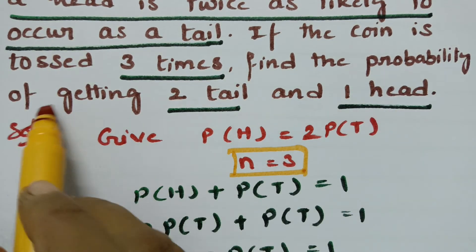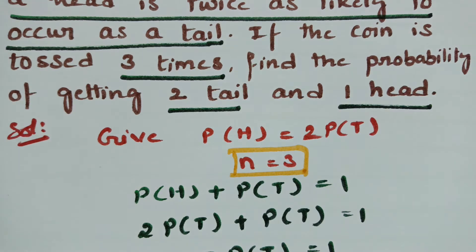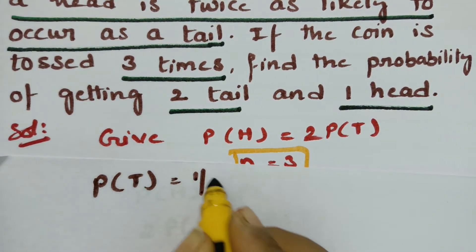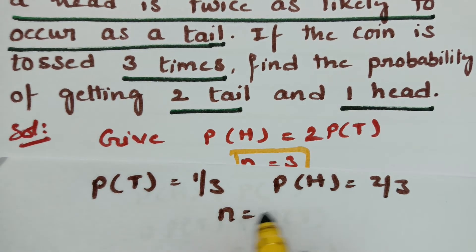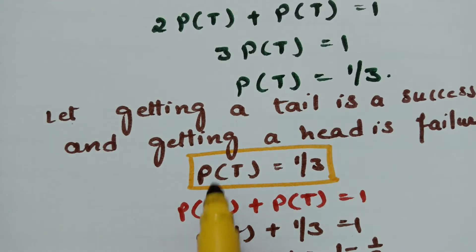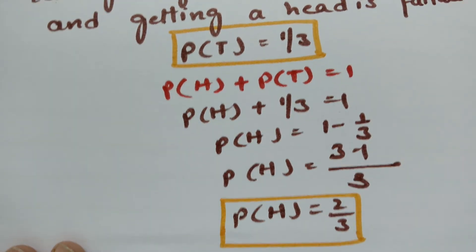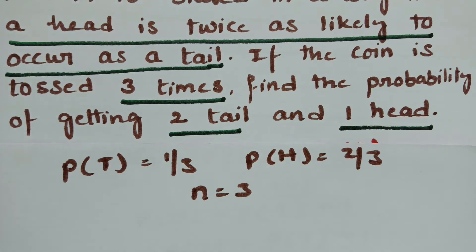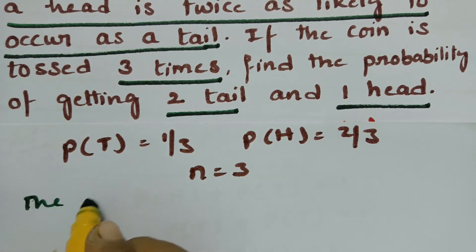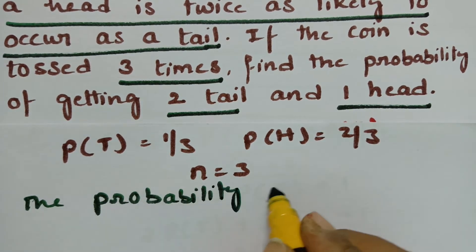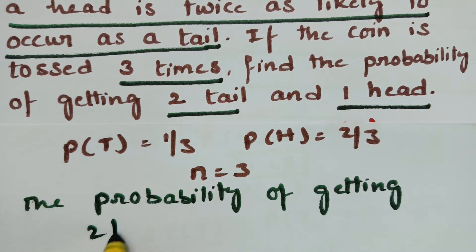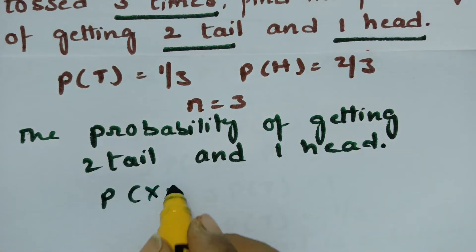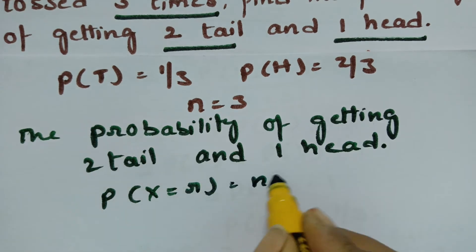Now we have P(tail) = 1/3, P(head) = 2/3, and n = 3. We need to calculate the probability of getting two tails and one head. Using the binomial distribution formula: P(X = r) = nCr · p^r · q^(n−r), where we are choosing two tails.